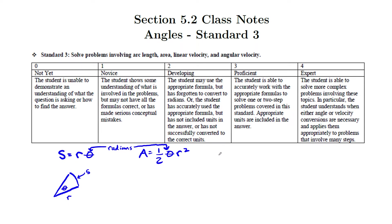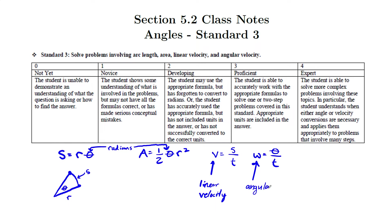Then we looked at linear velocity and angular velocity. Linear velocity is arc length over time — the distance covered per unit time, describing how fast a point moves along the arc. Angular velocity is the angle subtended per unit time, describing how fast the angle is changing.